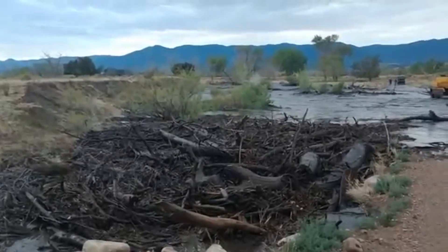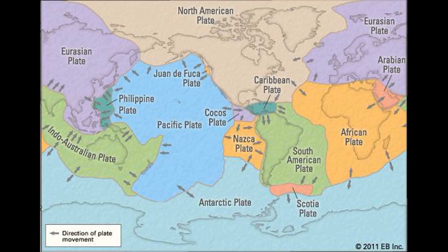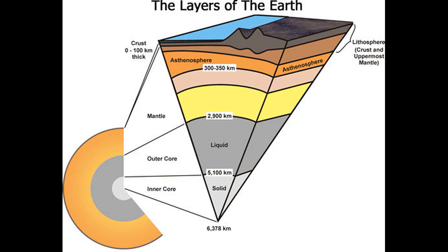So how did they actually get all the way up there? Well, to understand mountains and how they form, we have to first understand plate tectonics. The Earth is divided up into three basic layers: the crust, the mantle, and the core.